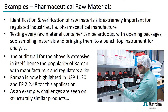Looking at practical examples: the pharmaceutical raw materials testing marketplace. Identification and verification is extremely important here. Regulators are now pushing for 100% testing of every single raw material container that comes on site. Opening packages, subsampling, and bringing them to a lab can be extremely arduous, time-consuming, and costly, and gives more room for error such as mislabeling samples.